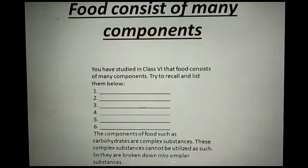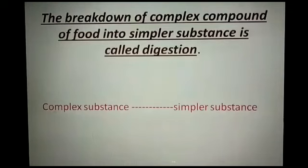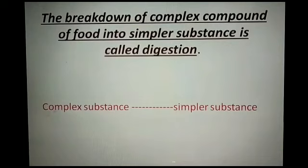These components of food, such as carbohydrates, are complex substances, and these complex substances cannot be utilized as such. So they are broken down into simpler substances. The breakdown of complex compounds of food into simpler substances is called digestion. If someone asks you to define digestion, say: the breakdown of complex compounds of food into simpler substances is called digestion.